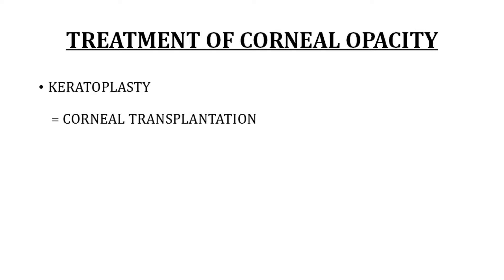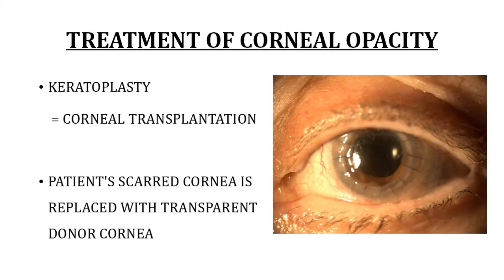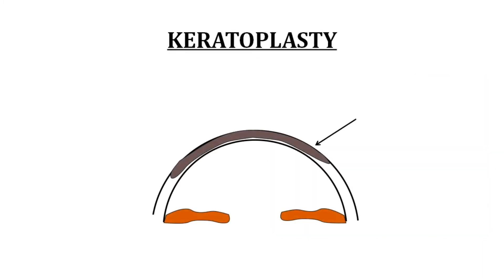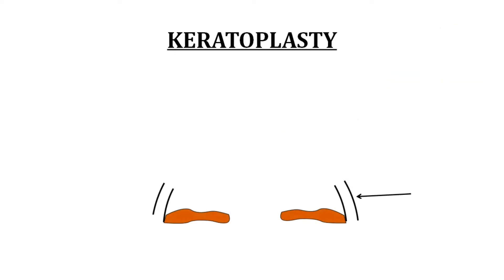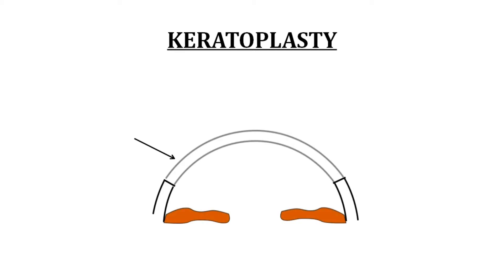Let's talk about the various treatment options available for corneal opacities. First is keratoplasty, which means corneal transplantation. In this procedure, the scarred cornea of the patient is replaced with a transparent donor cornea. Here you can see an eye with corneal scarring. We remove the cornea using a circular-shaped device known as a corneal trephine, leaving behind a 360-degree rim of peripheral cornea. Then the donor cornea is prepared and sutured to this rim.